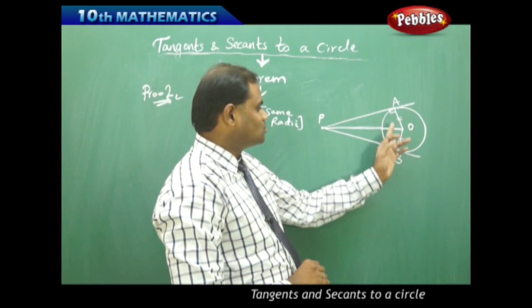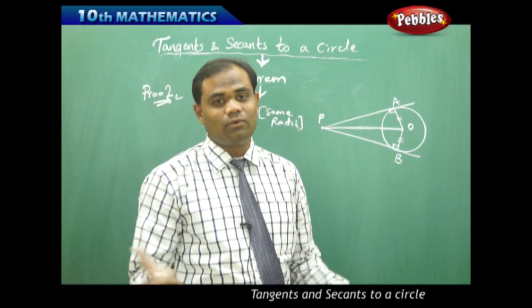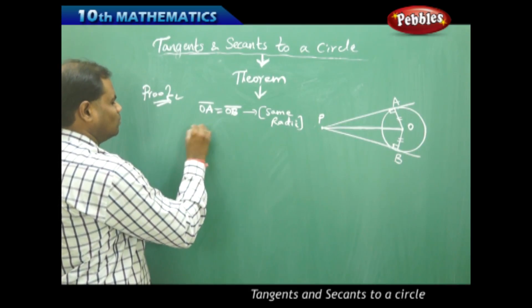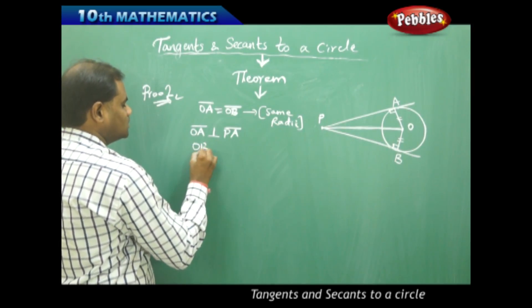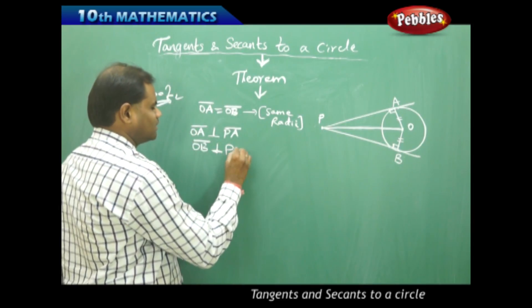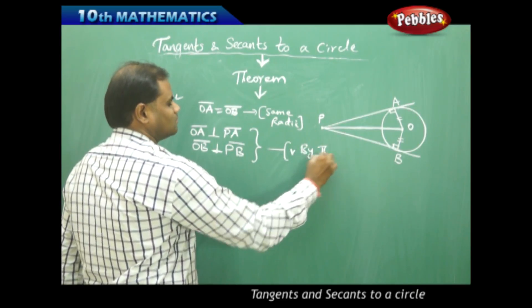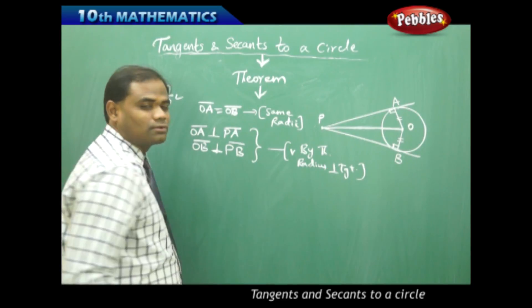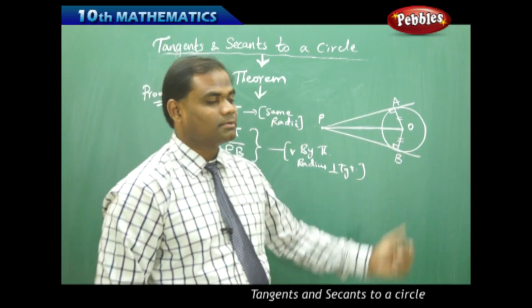Secondly, the angles at the tangent points are 90 degrees, because the radius is always perpendicular to the tangent — as established in previous sessions. Therefore OA is perpendicular to PA and OB is perpendicular to PB.